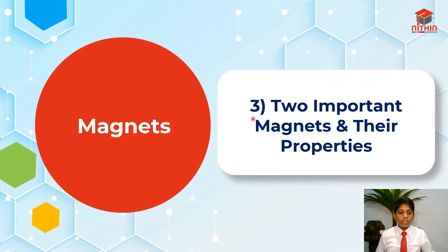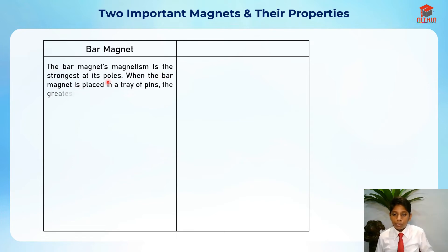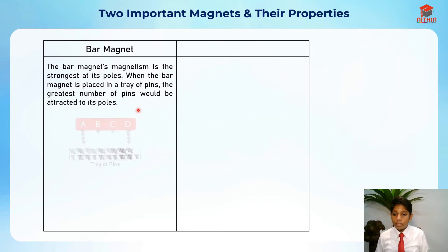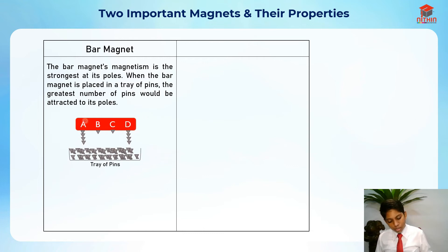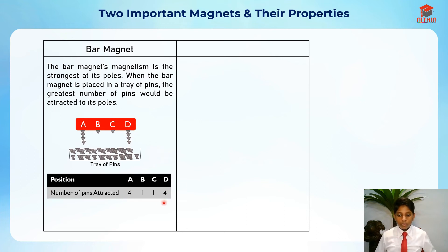For segment number three, I'm going to discuss two important magnets and their properties. For the first magnet, the bar magnet — its magnetism is strongest at its poles. When the bar magnet is placed in a tray of pins, the greatest number of pins will be attracted to its poles. A and D are its poles, so A could be north and D could be south pole, attracting four pins each, while B and C in the middle attract only one pin each.